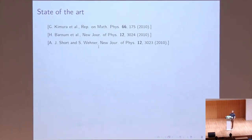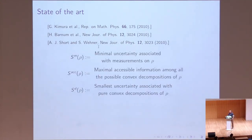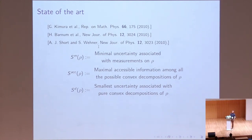Within the context of generalized probabilistic theories, the Shannon function has been used to define three different notions of entropy that are not equivalent: the measurement entropy, which is the minimal uncertainty associated with all possible measurements that can be performed on a state ρ; the maximal accessible information, obtained by maximizing the accessible information over all possible convex decompositions of a state ρ; and the decomposition entropy, which is the smallest uncertainty associated with the pure convex decompositions of the state ρ.